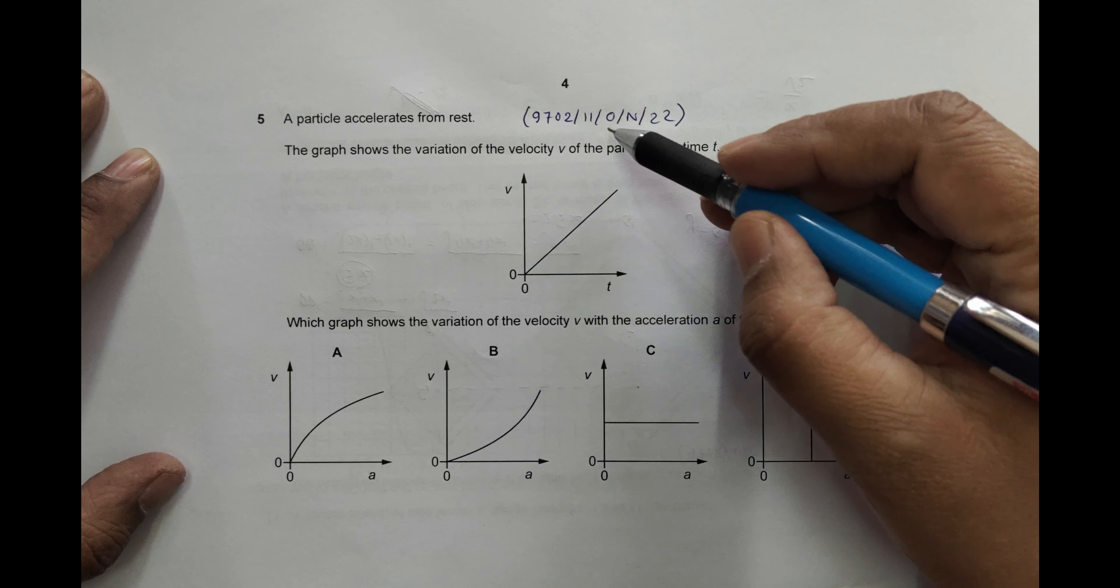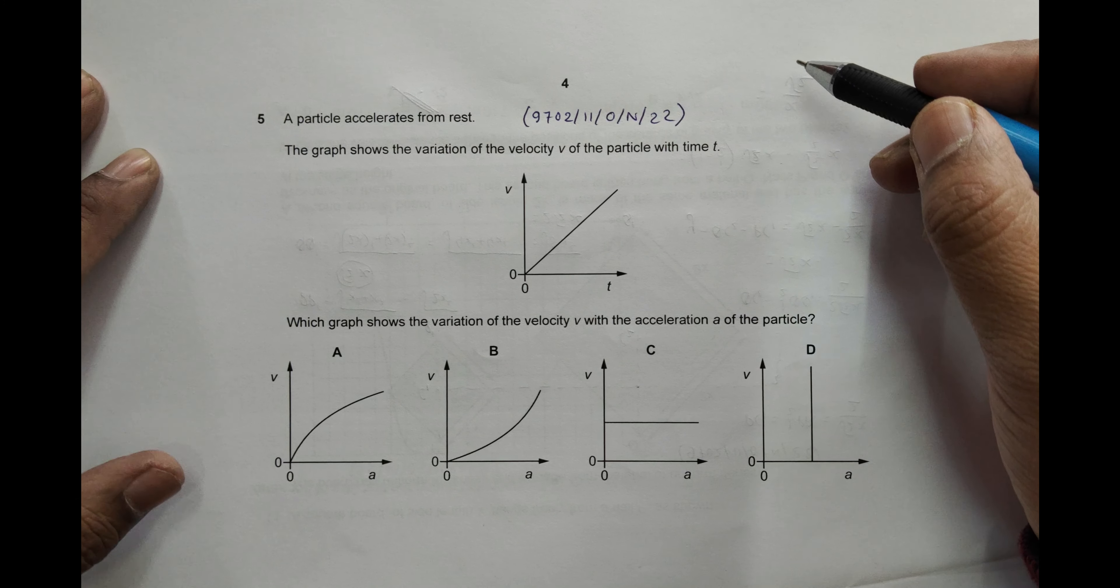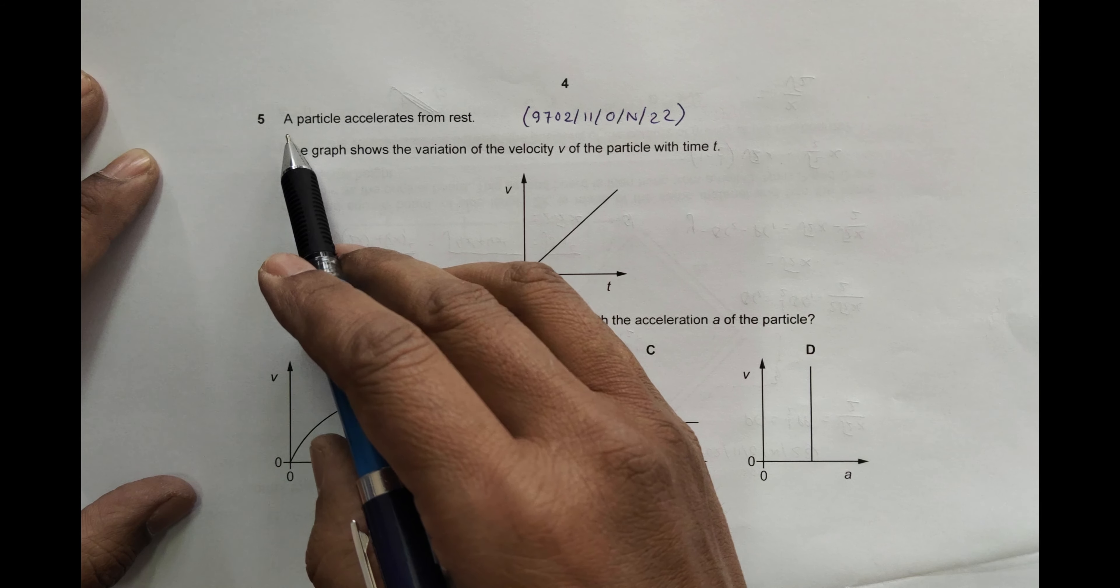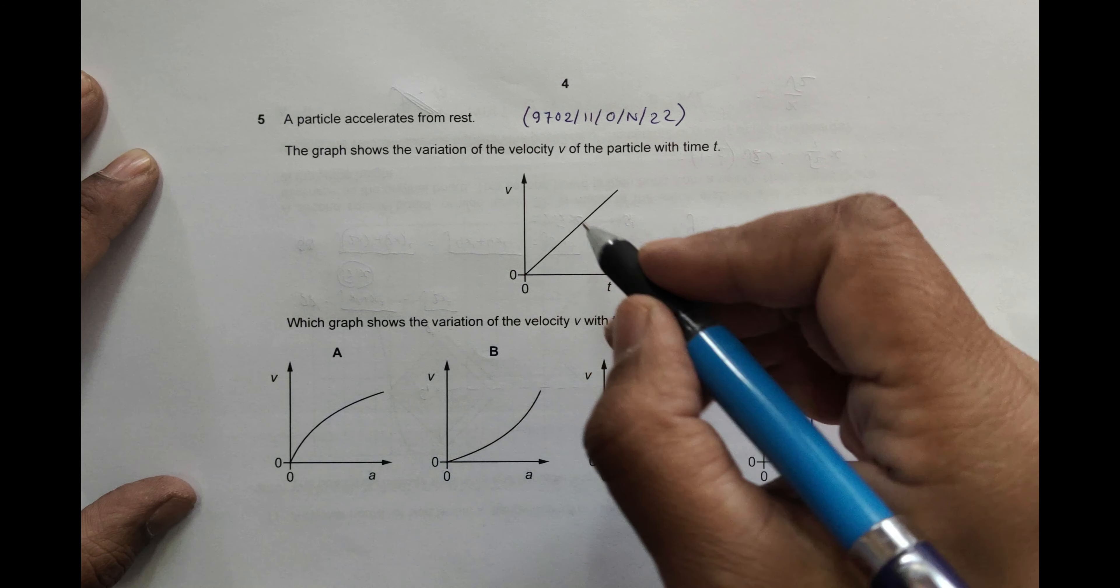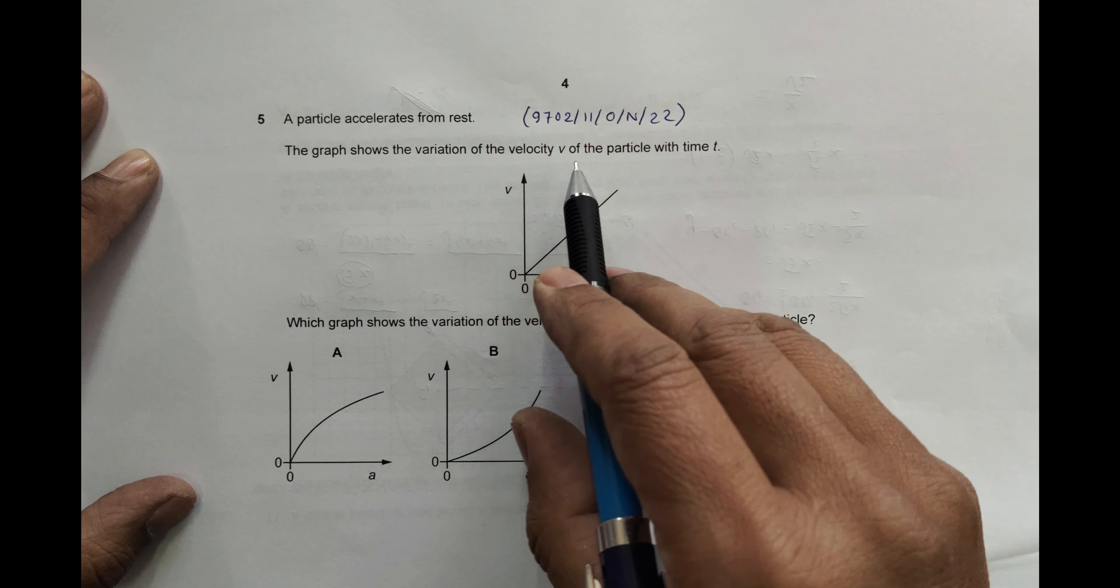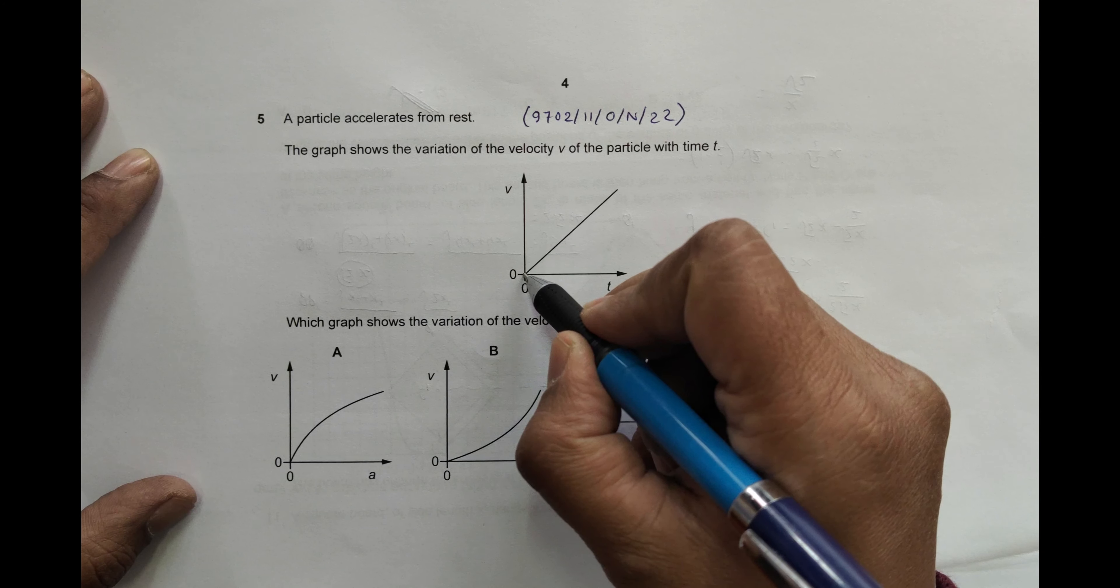Hello folks, this is 2022 October November paper 1-1, question number 5. This question is concerned with the chapter kinematics. It says a particle accelerates from rest. The graph shows the variation of the velocity V of the particle with time t. Since we start from rest, the initial velocity should be 0.